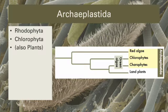To begin, I'll delve into the Archaeplastida. The name means Ancient Plastids, suggesting that these were the first photosynthetic eukaryotes, and this is a pretty good name as we understand it.